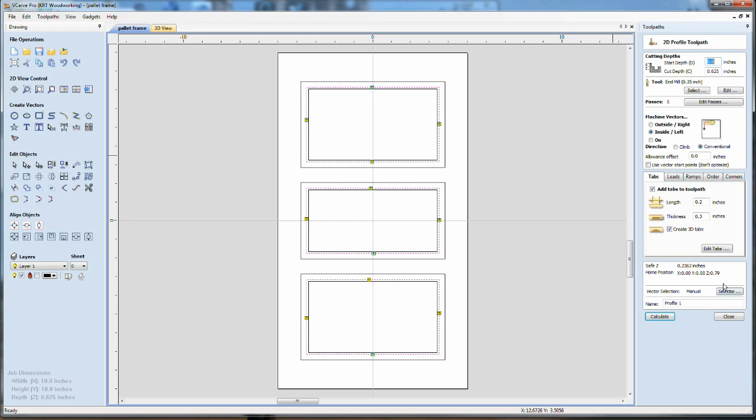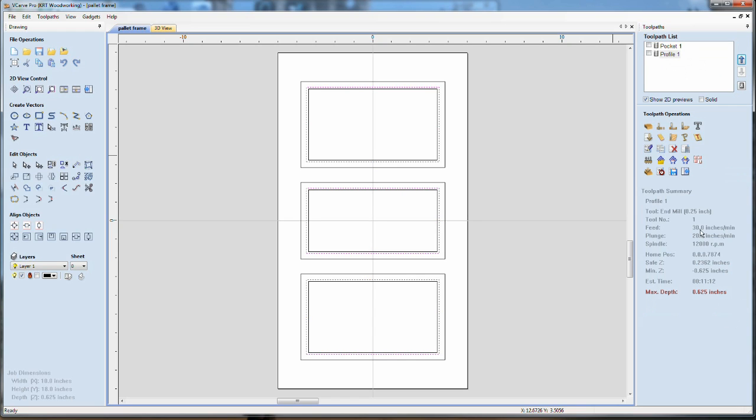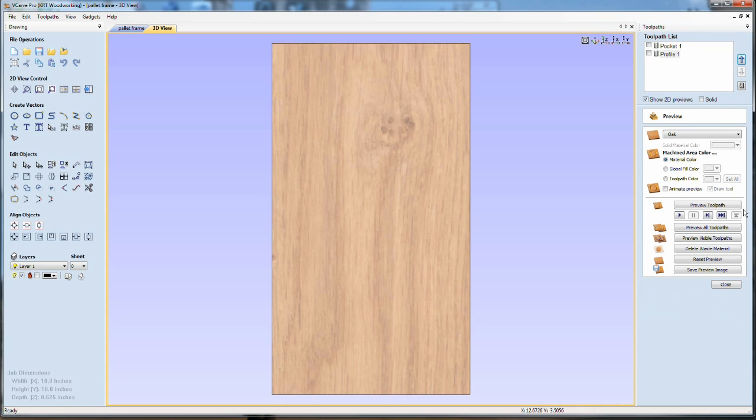To give it a little bit more visual interest I decided I would use a pocketing toolpath around the edge of the openings and that would reveal the clean oak underneath the rough texture of the pallet.